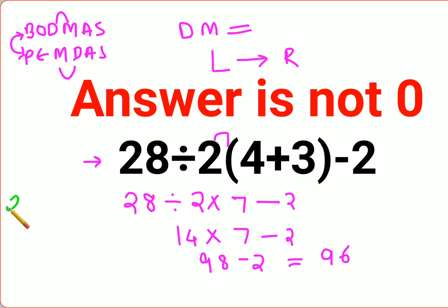The answer for this sum should be 0 only if the sum was written in this format. This entire thing 2 times 4 plus 3 was written in another bracket.